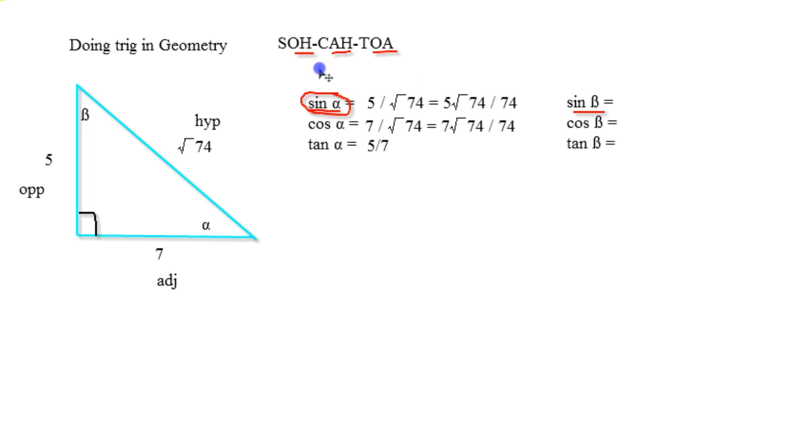But this decimal that you get when you plug in sine of whatever angle alpha is for this triangle, it will be equal to if you put this into the calculator and then divide it by 74. And obviously these two, we would want them in parentheses on top.